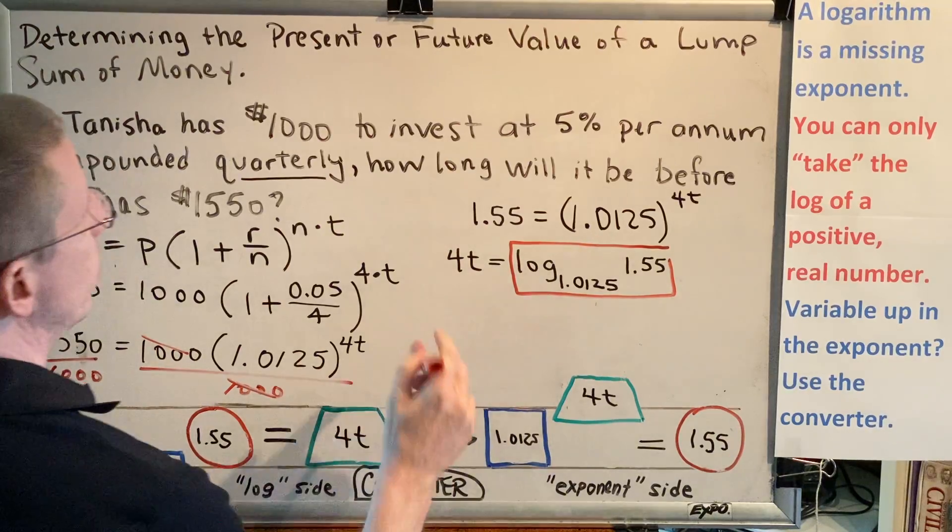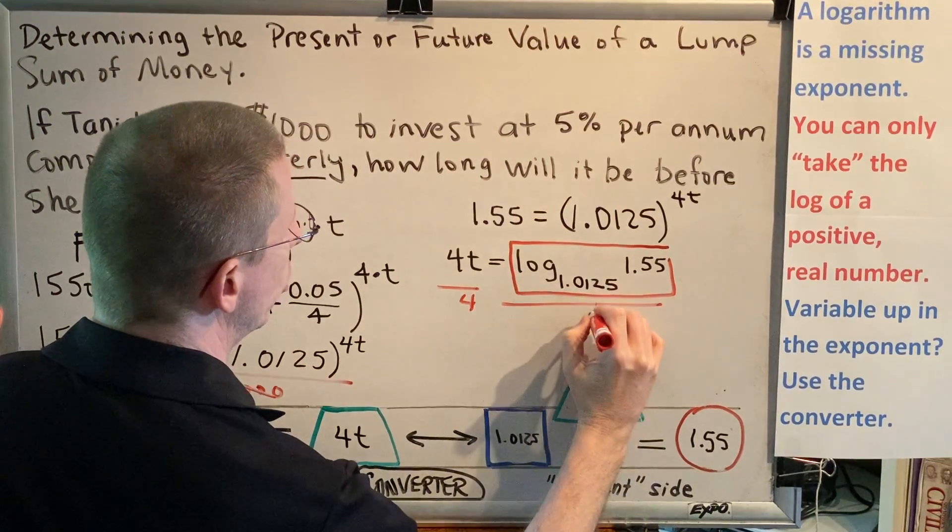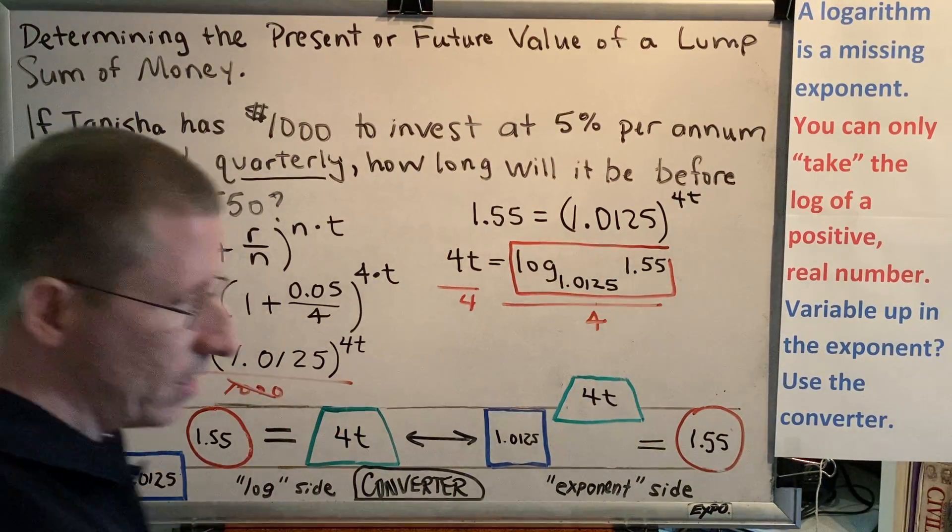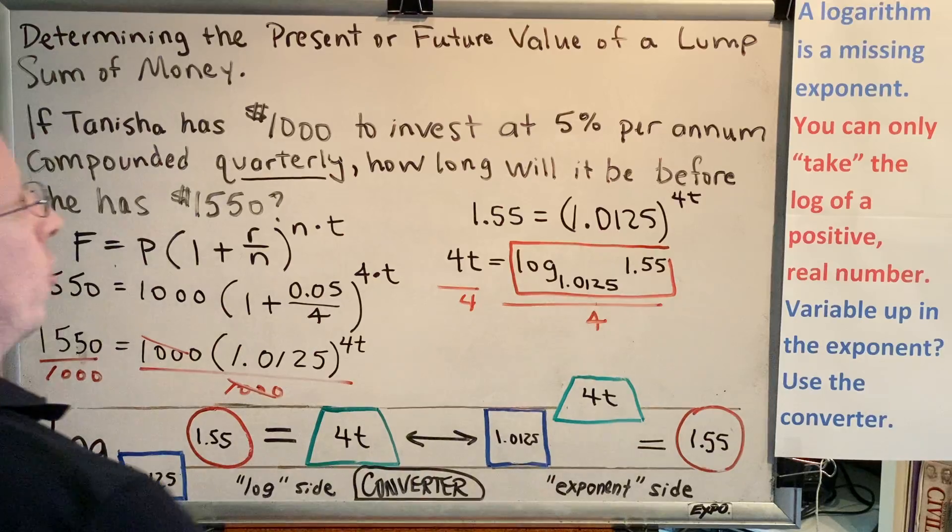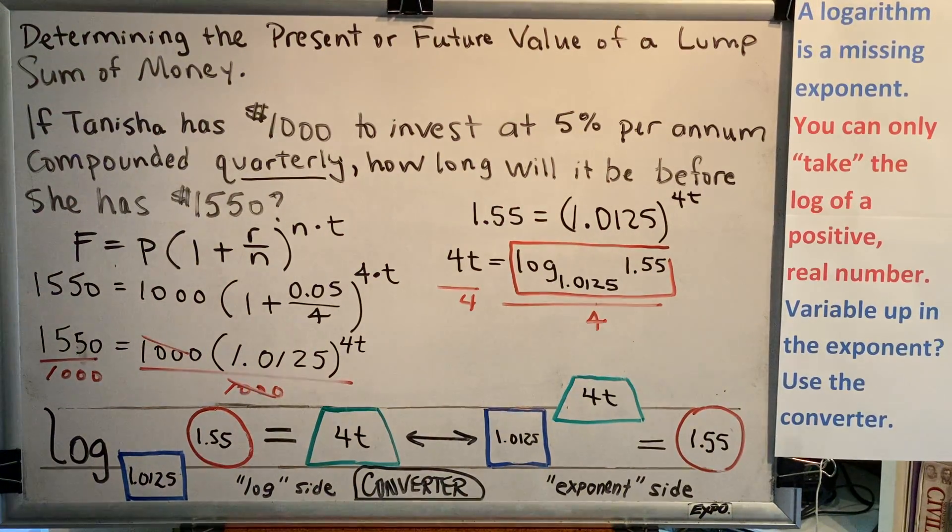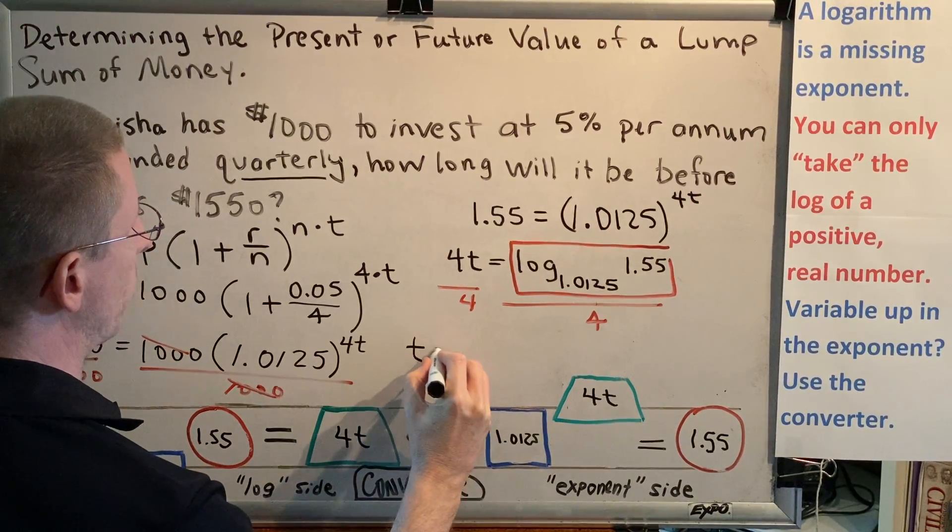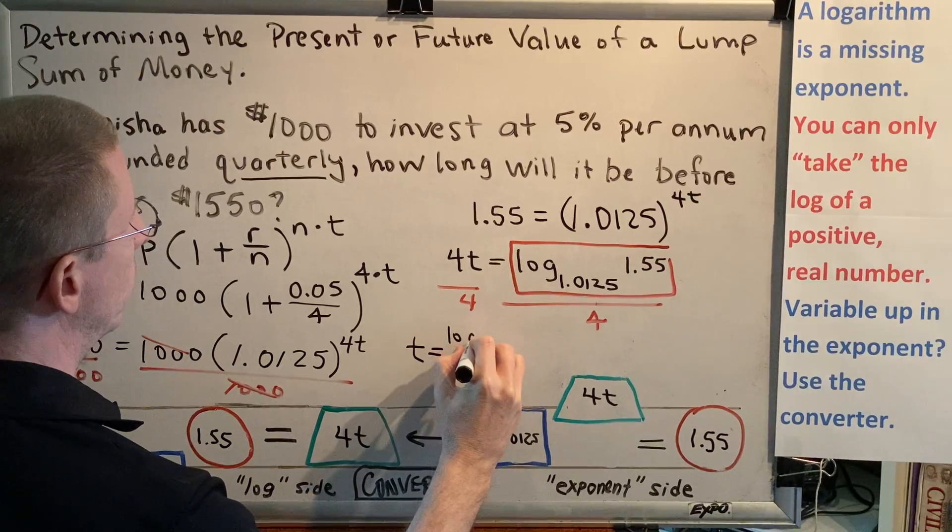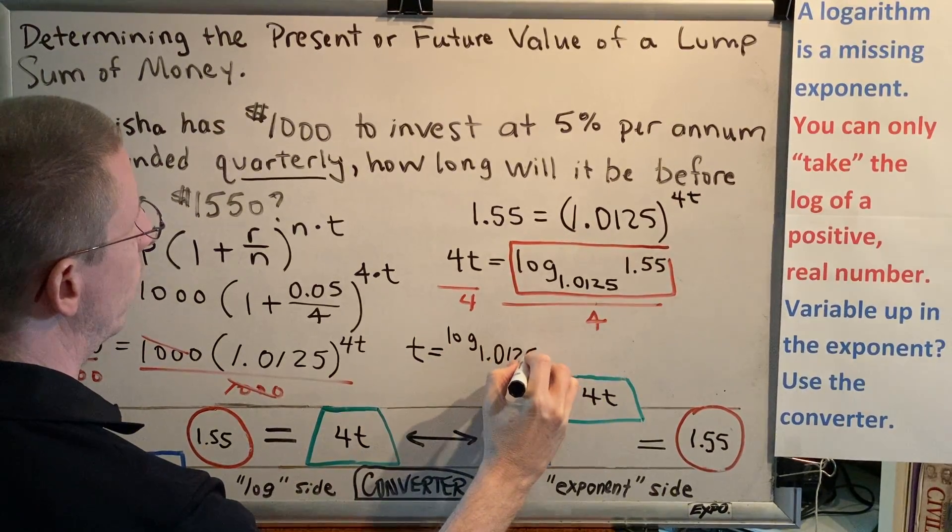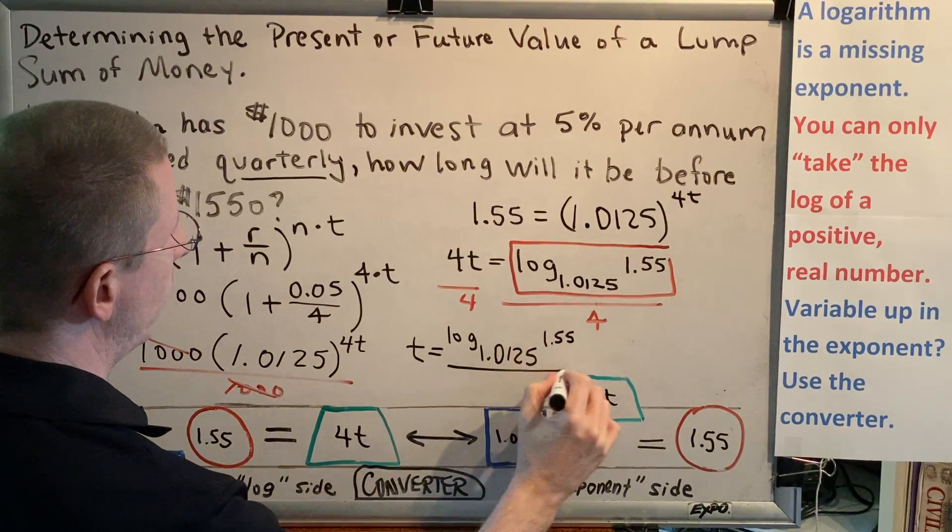Because as we now turn our attention to solving for t, we're going to divide by 4 on both sides. And when we do, we recall that nothing outside the brick can affect anything inside the brick, except when you're using rule 9 and you're coming through this little gap, which we are not doing right now. So our exact answer to this problem is that t is equal to log base 1.0125 of 1.55 all divided by 4.